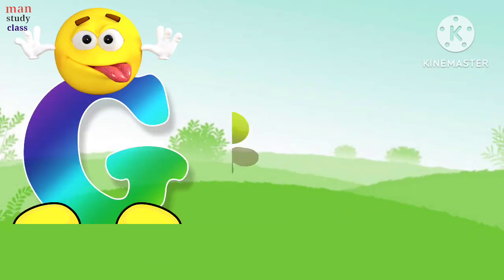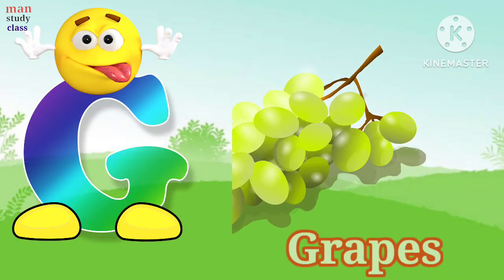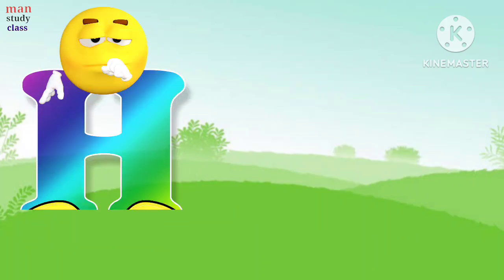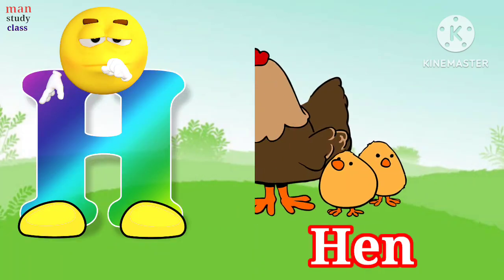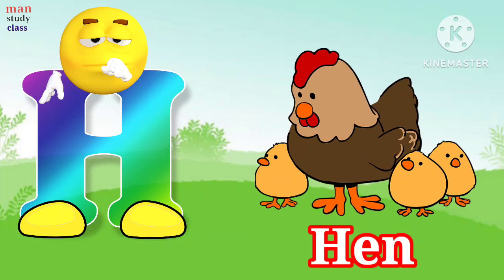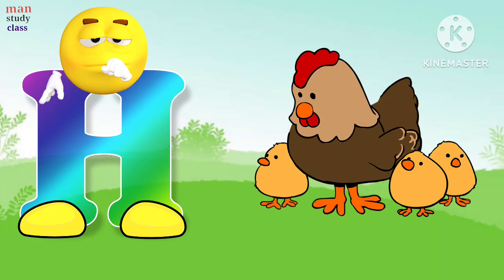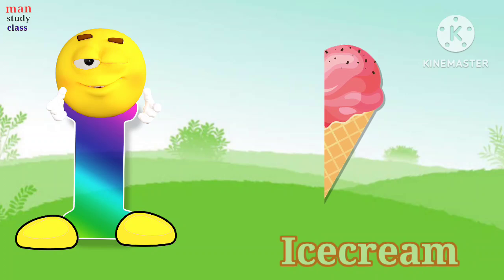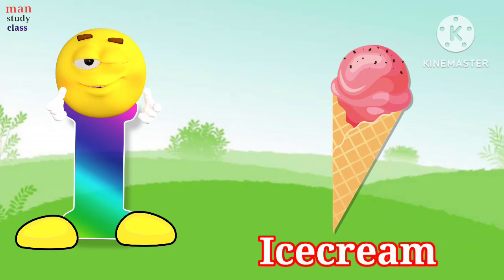G for grapes, grapes means angoor. H for hen, hen means murgi. I for ice cream, ice cream means ice cream.